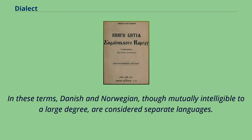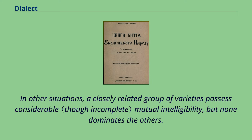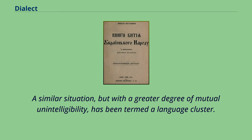In these terms, Danish and Norwegian, though mutually intelligible to a large degree, are considered separate languages — described in the framework of Heinz-Klaus as languages by Ausbau rather than by Abstand. In other situations, a closely related group of varieties possesses considerable mutual intelligibility but none dominates the others. To describe this, the editors of the Handbook of African Languages introduced the term dialect cluster as a classificatory unit at the same level as a language, while a similar situation with greater mutual unintelligibility has been termed a language cluster.